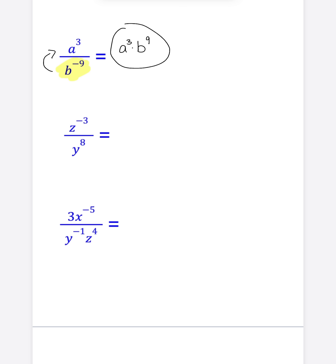Second example, let's follow those same two steps. Move the base with the negative exponent to the other side of the fraction bar. That's step number one. So Z was in the numerator, it moves to the denominator. Step number two, make the negative exponent positive.